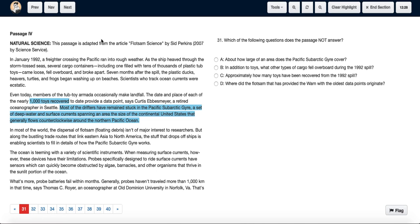tell us what was there in the other containers. So we can say option B is not answered. Hence, option B: in addition to toys, what other types of cargo fell overboard during the 1992 spill, is not answered.